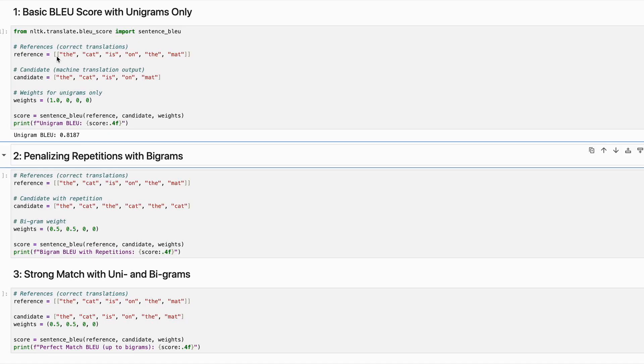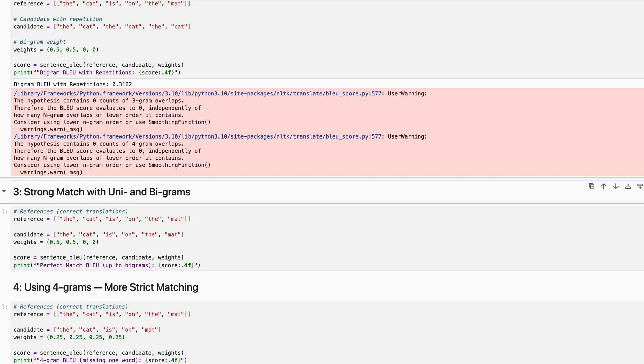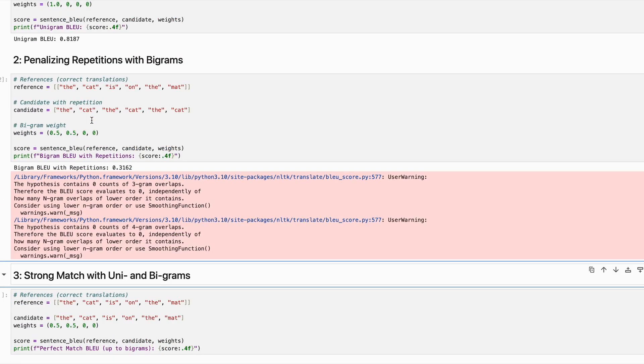As you can see, the unigram BLEU score is 0.8187, because except for 'the', all the remaining words are matching. Let's look at the next example. It's throwing some warning because of certain scores it might be zero or something which would have occurred somewhere, but irrespective, as you can see in this case also...